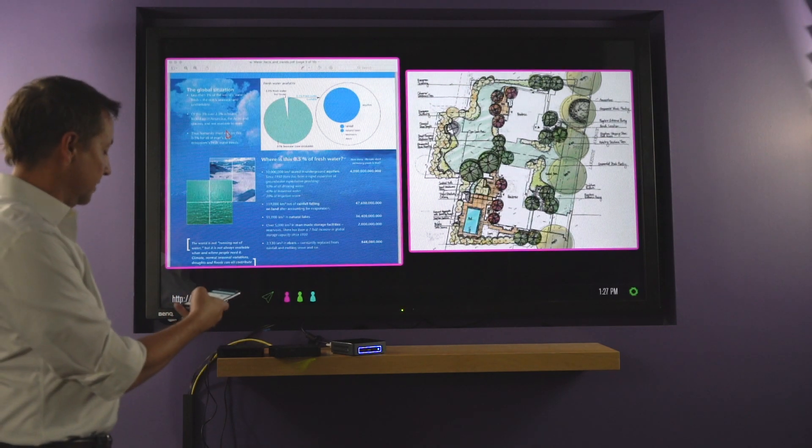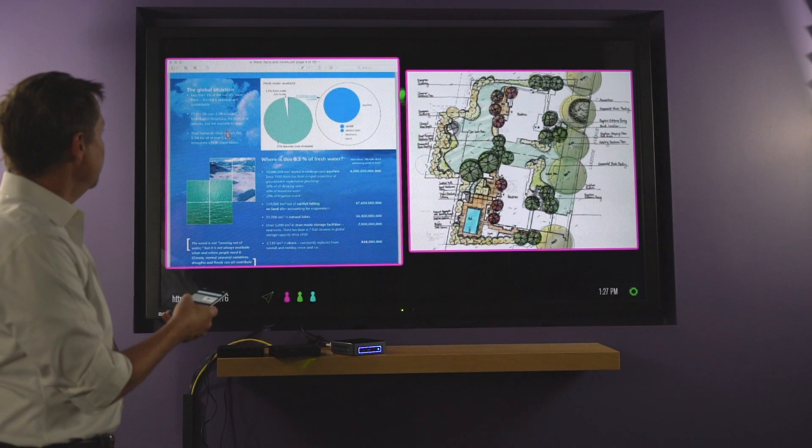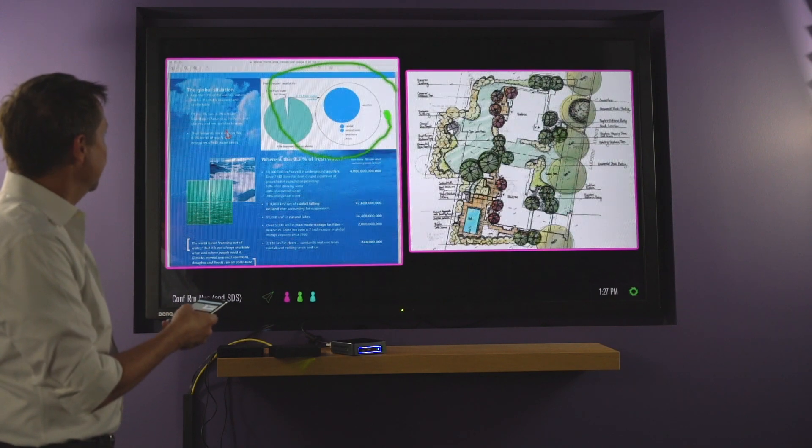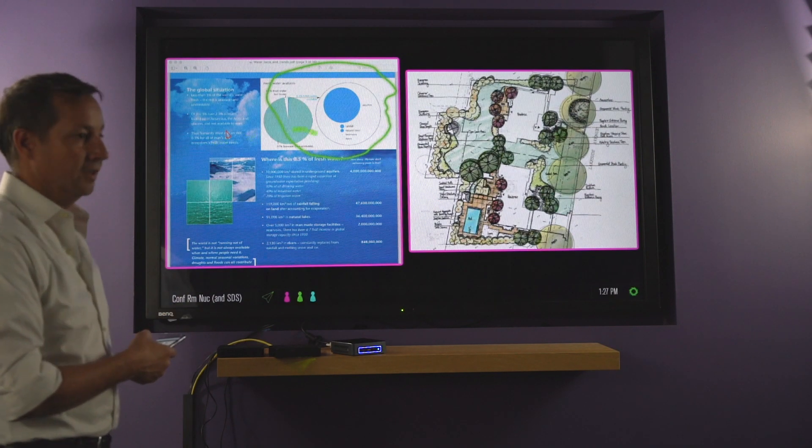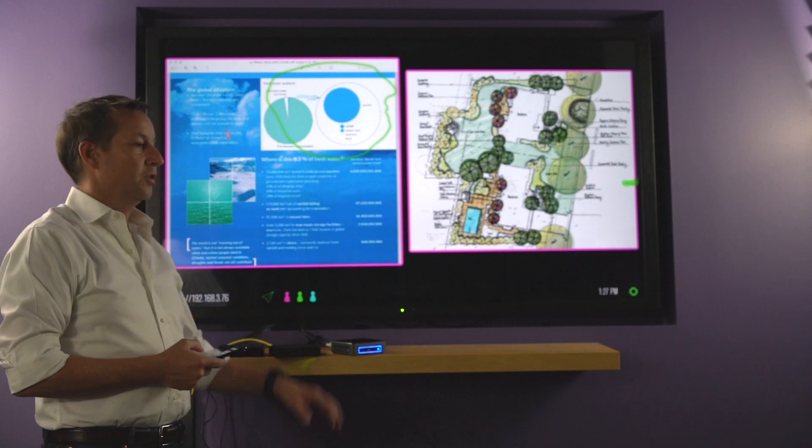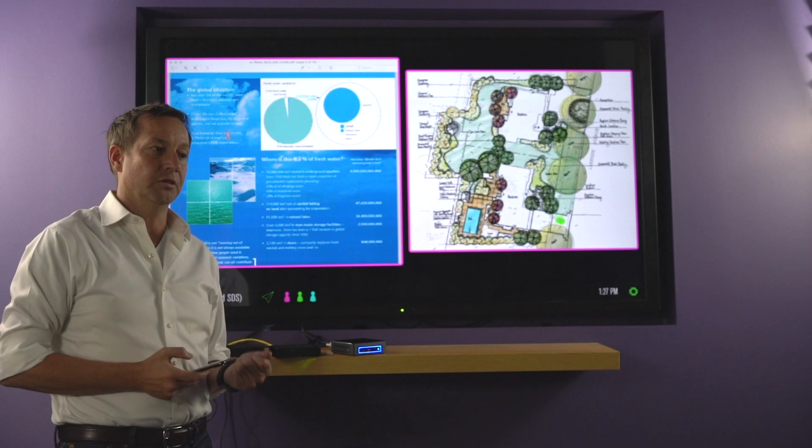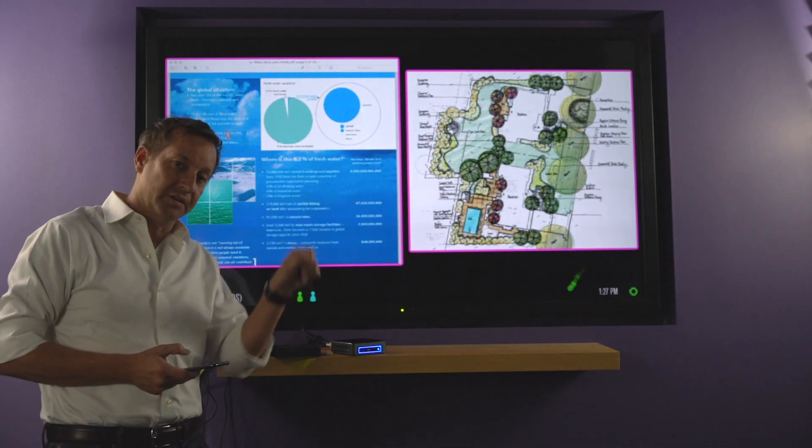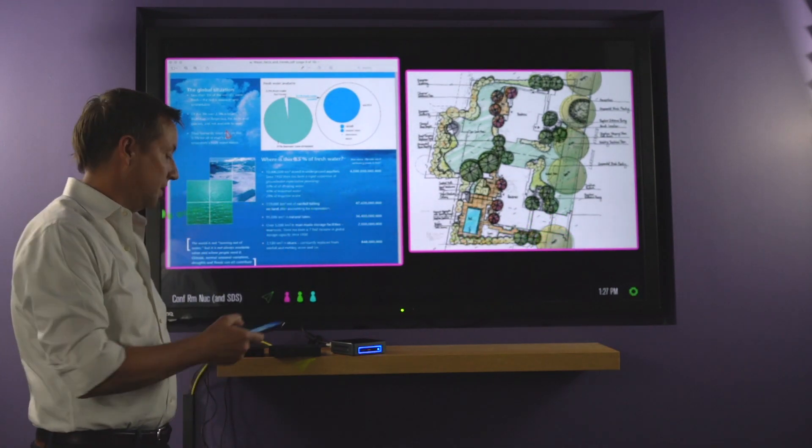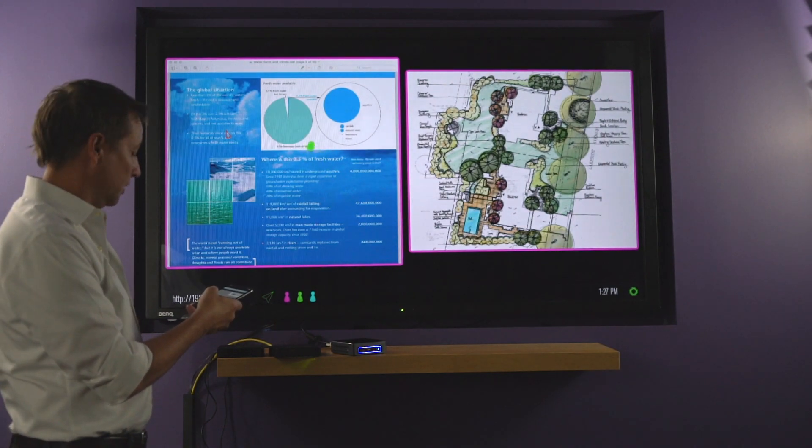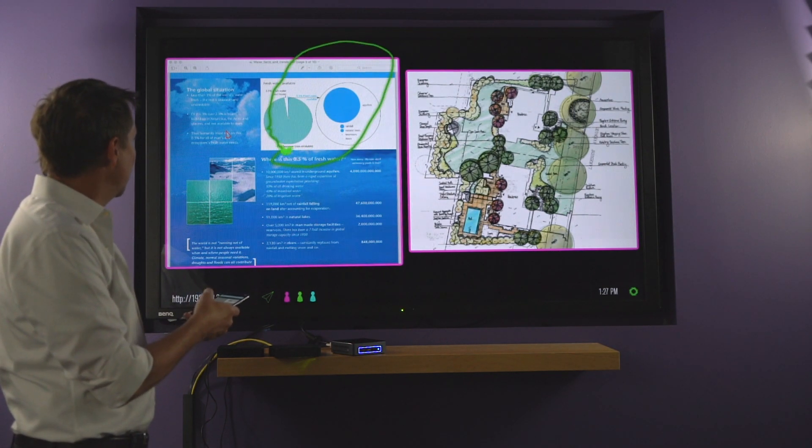So one other thing I want to point out with annotation, you will have noticed that when I made that circle, I didn't necessarily close the gap, and then Solstice did it for you. The reason we did that is we found when we did the studies for annotation, users are hesitant to use it often because they feel like they have to be artists. They have to really carefully draw things on the scene.